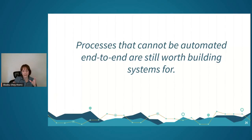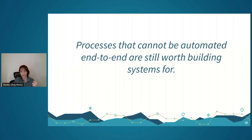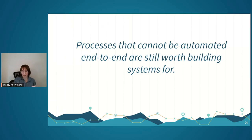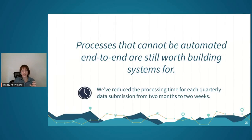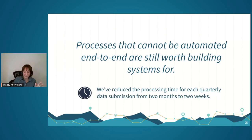What I want you to remember is that even if you have a process that cannot be fully automated end-to-end, it is still worth paying a lot of attention to how you do it and focusing time on building systems to make it more efficient. Our quarterly data processing used to take a whole team two months. We got that time down to two weeks, and we're continuing to make it faster. It's a lot of money saved, so making sure your humans and pipelines talk to each other well is worth the hassle.